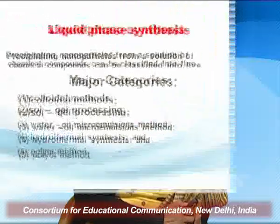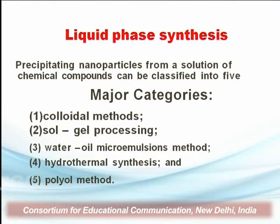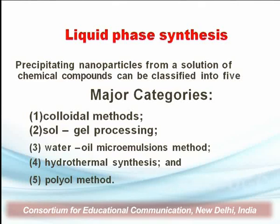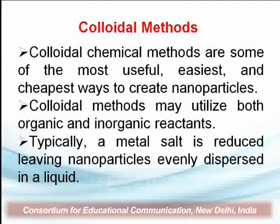We now discuss another part of nanomaterial synthesis, defined in five major categories under liquid phase synthesis. These five categories are: first, the colloidal method; second, sol-gel processing; third, the water-oil method; fourth, hydrothermal synthesis; and fifth, the pyrolysis method. These methods involve precipitating nanoparticles from a solution of chemical compounds used for thin-film deposition. The colloidal method and sol-gel processing are the most important and are mostly used in laboratories for development of thin films.